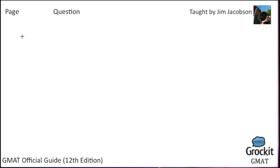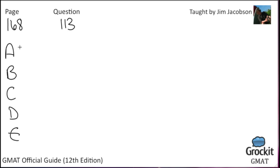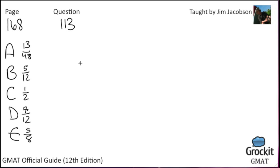Now we move on to the next page with a diagram. Page 168, question number 113. Answer choices are 13/48, 5/12, 1½, 7/12, and 5/8. The front of a 6-foot by 8-foot rectangular door has brass rectangular trim as indicated by the shading in the figure. If the trim is uniformly 1 foot wide, what fraction of the door's front surface is covered by the trim?